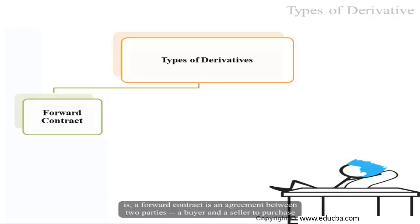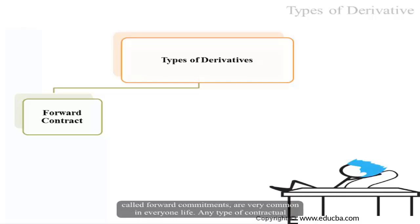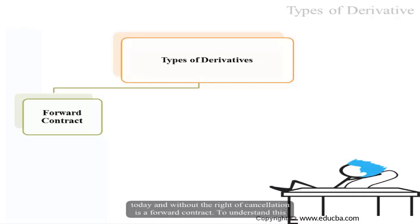A forward contract is basically an agreement between two parties, a buyer and a seller, to purchase or sell something at a later date at a price agreed upon today. Forward contracts, sometimes called forward commitments, are very common in everyone's life. Any contractual agreement that calls for the future purchase of a good or service at a price agreed upon today, and without the right of cancellation, is a forward contract.